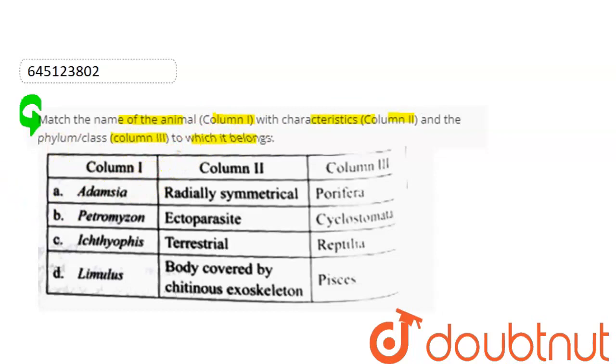Okay, column 1, we have first given it Adamsia, which is CNIDARIA. Column 2, we have symmetry regarding this, which is radial symmetry.